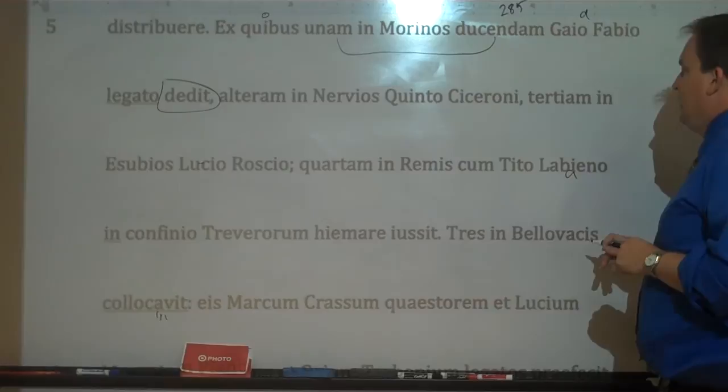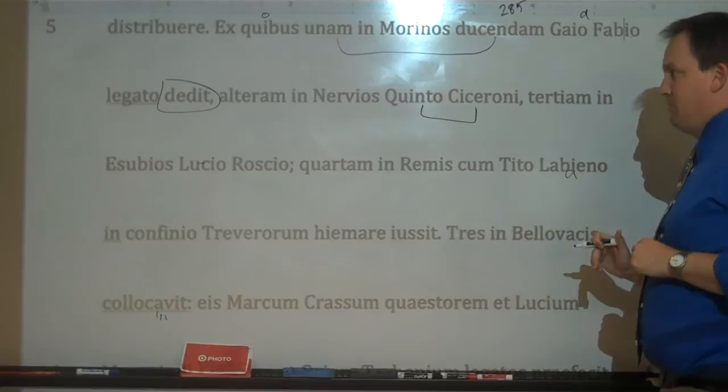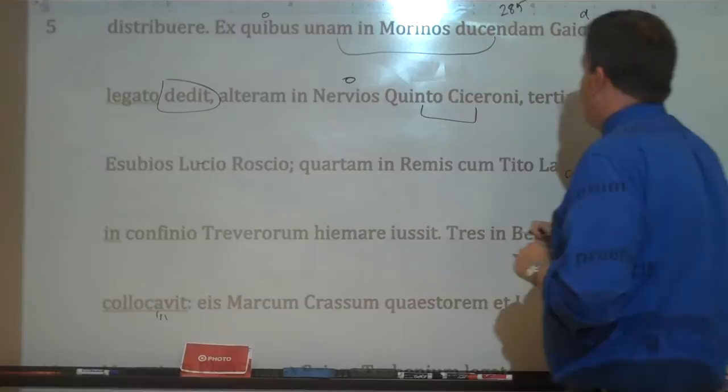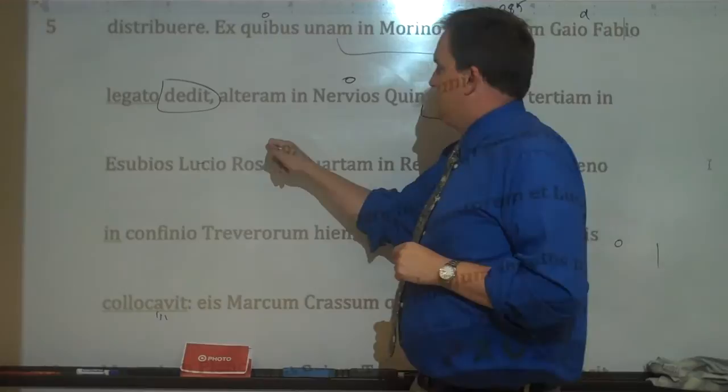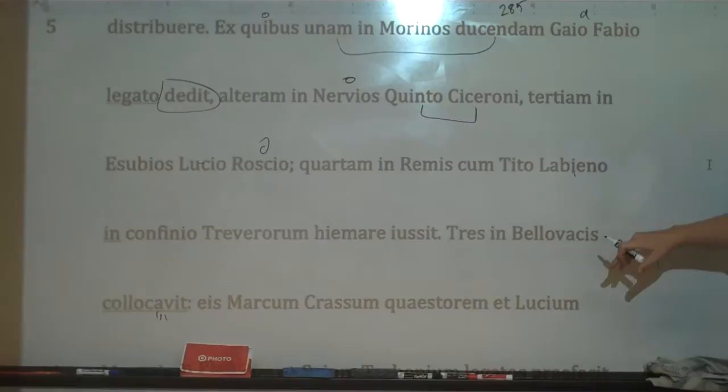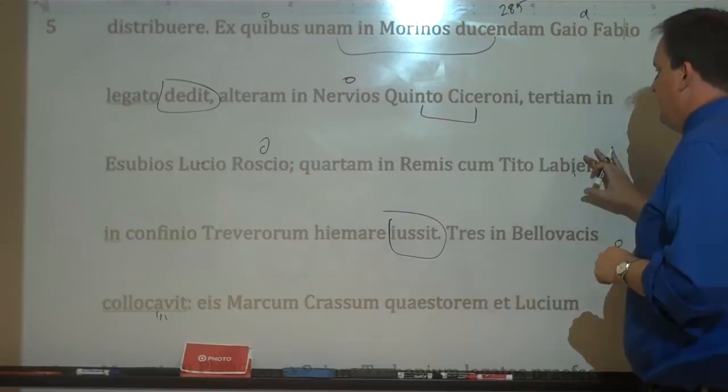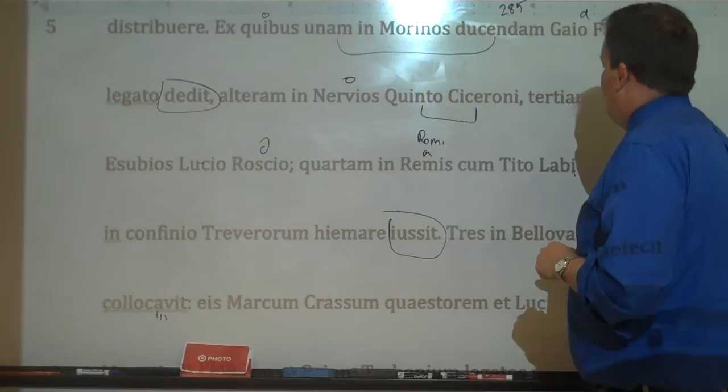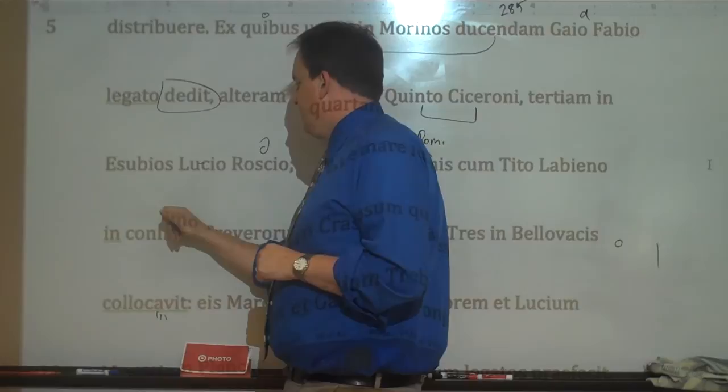Another legion he gave to Quintus Cicero — and this of course is Cicero's brother, the famous Cicero — to be led among the Nervi. And the third legion he gave to Lucius Rostius, dative, to be led among the Usubi. The fourth one he ordered to winter among the Remi, with Titus Labinius in the neighborhood, 'confinio,' of the Treveri — genitive.